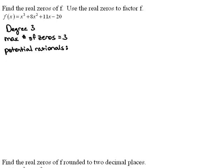So, let's see, p would be the factors of 20. So 20 would be 1 times 20, 2 times 10, 4 times 5, and that's it. So plus or minus 1, plus or minus 2, plus or minus 4, plus or minus 5, plus or minus 10, and plus or minus 20.